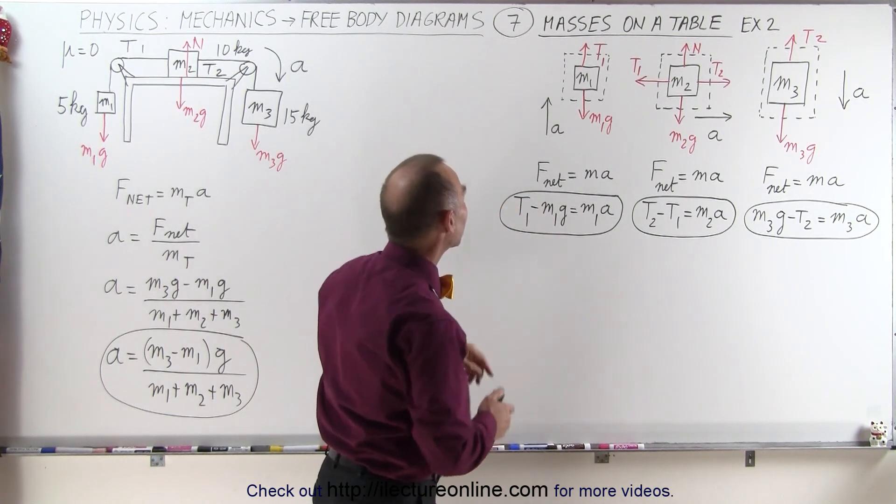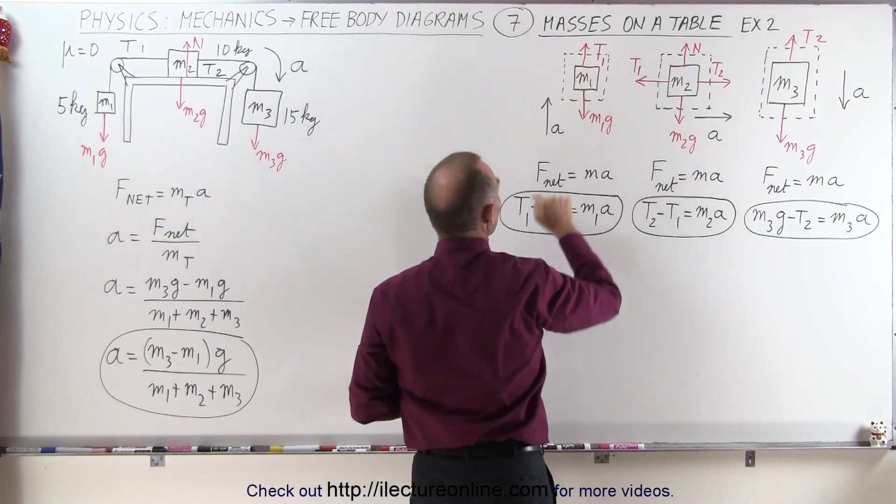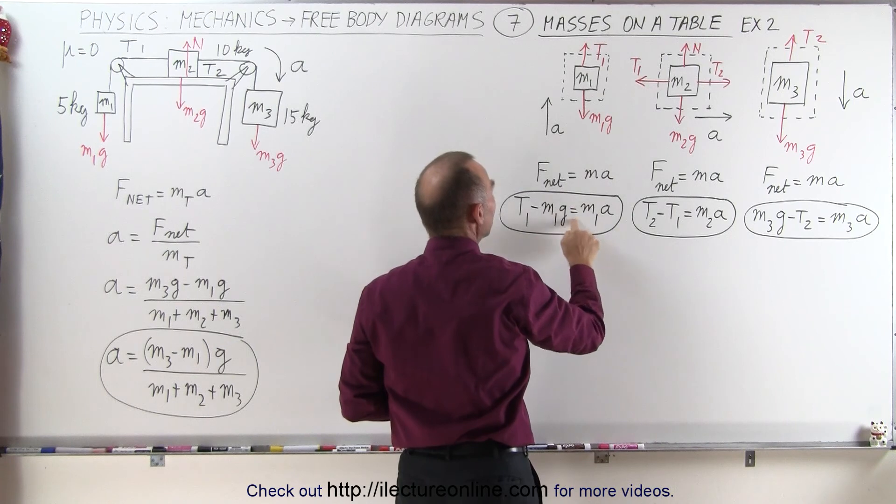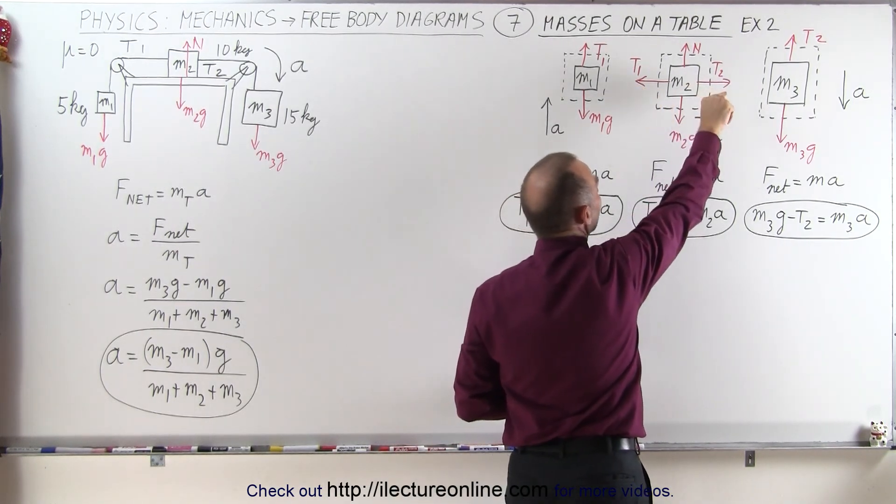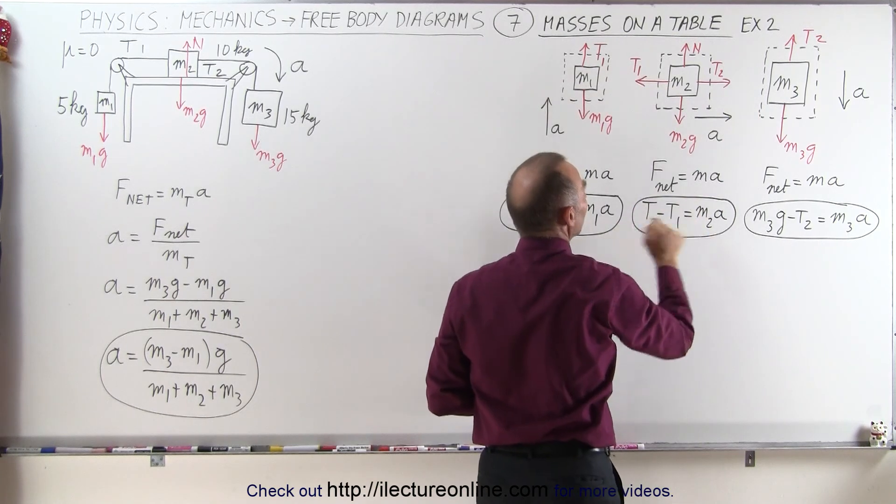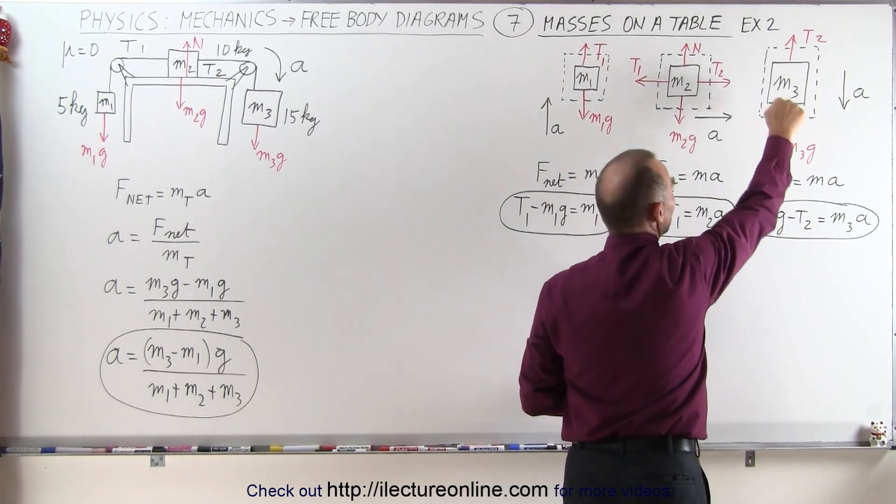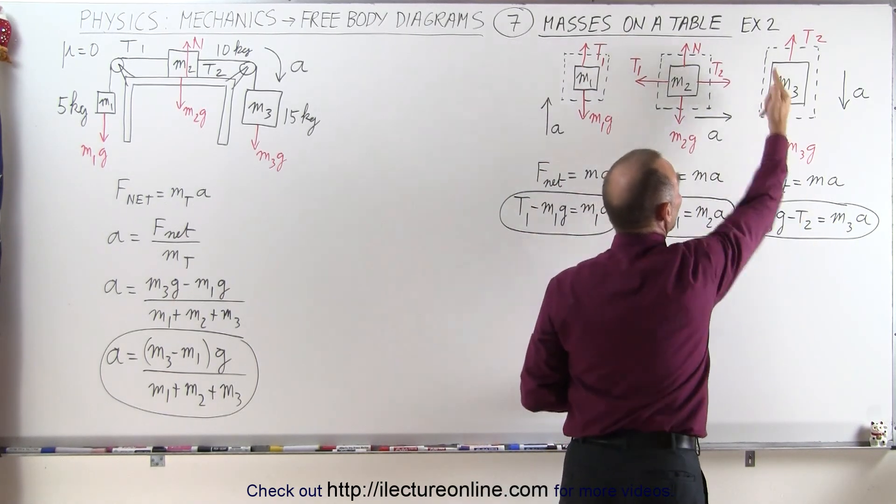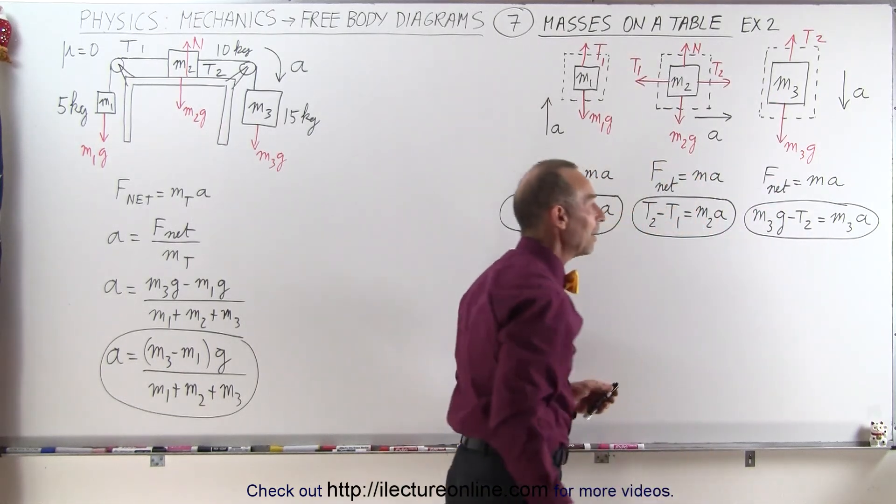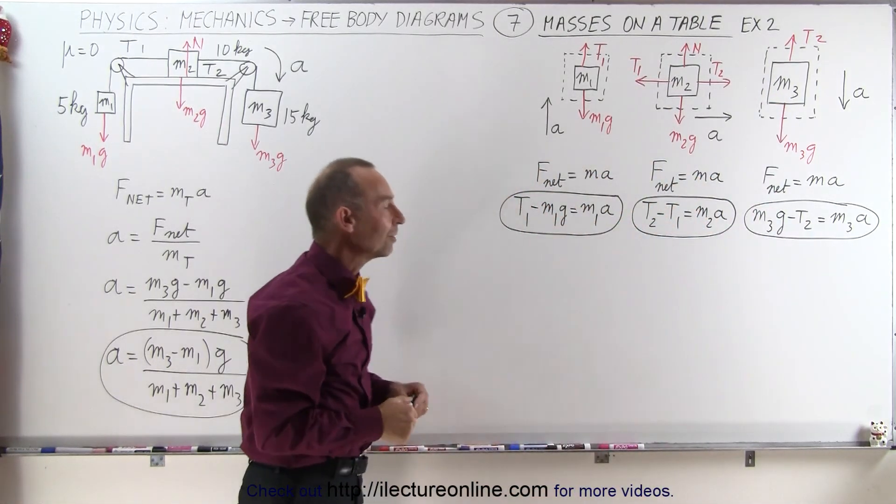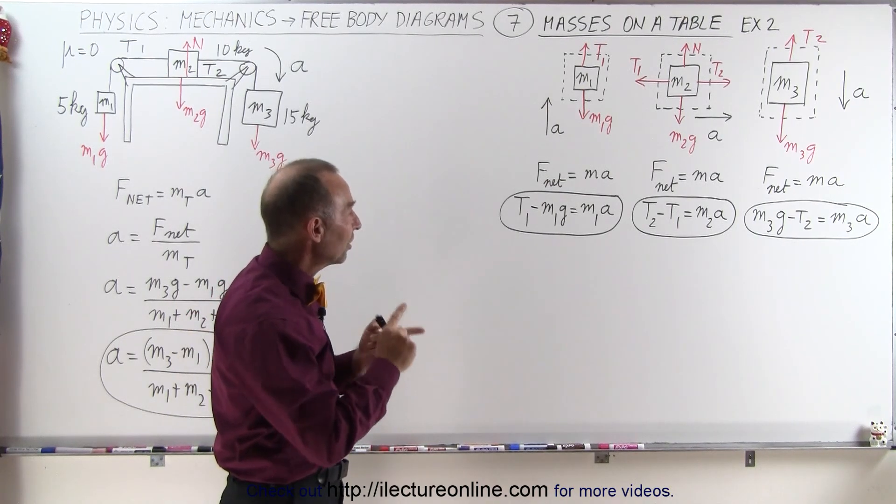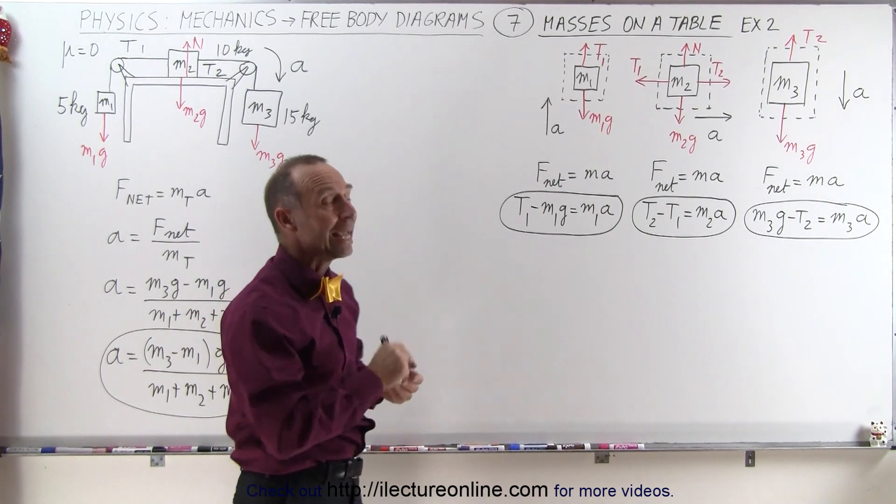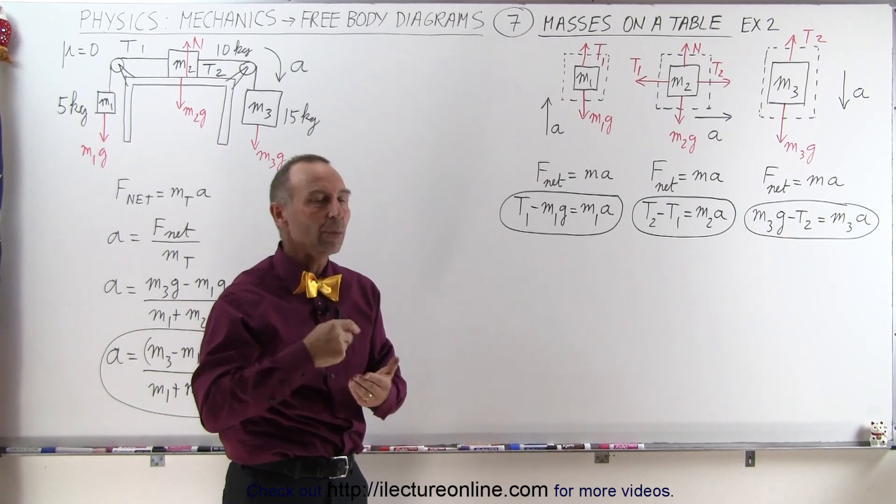For the first block it's the tension pulling up minus the weight pulling down equals the mass times acceleration. For the second block is the tension to the right minus the tension to the left equals ma. And for the third block is the weight of the third block minus the tension pulling up equals ma, m3a in that case. So now we have three equations and three unknowns: t1, t2, and a. So we have to get rid of both t1 and t2.